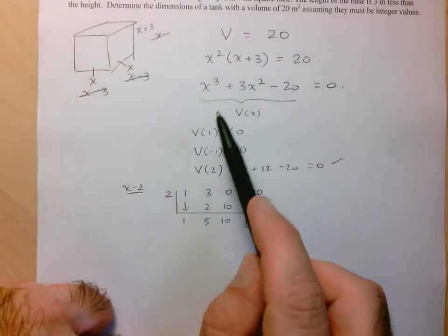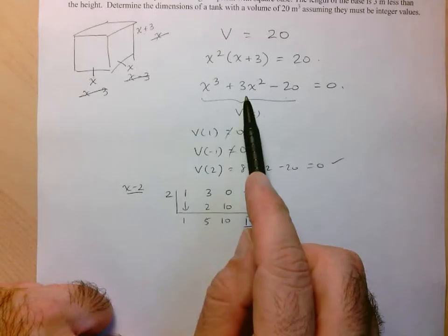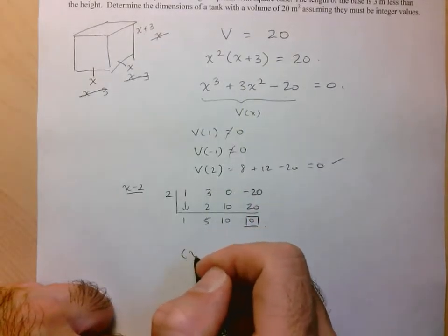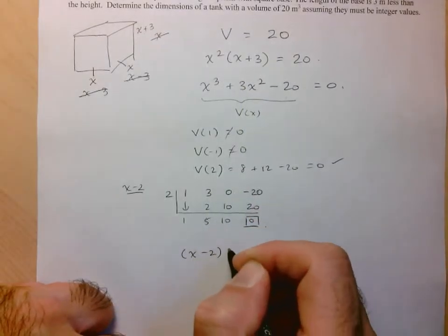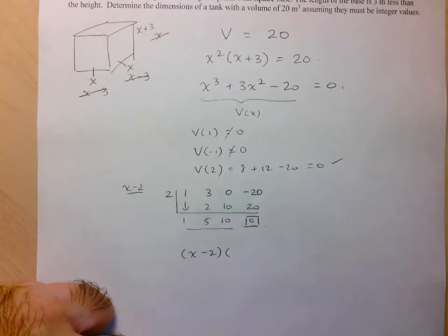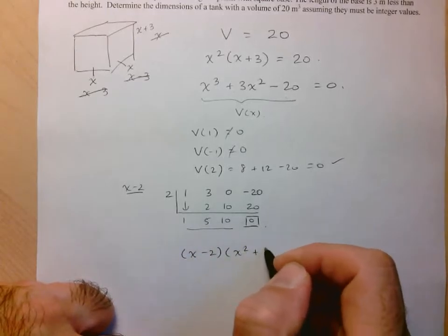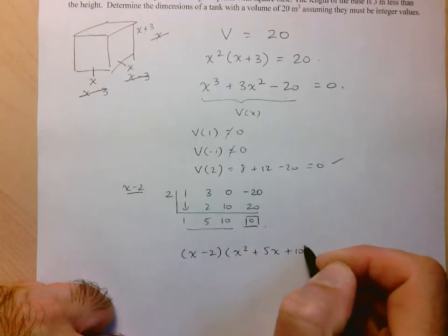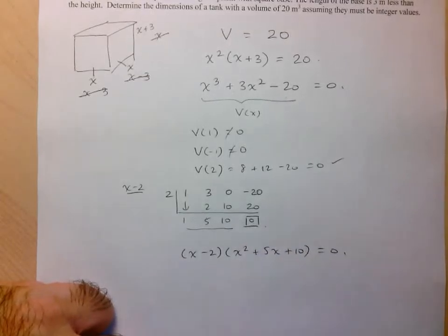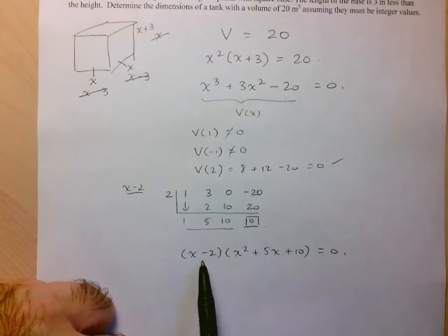So let's go back to our equation here. So now this left-hand expression can be written as x minus 2 times, and we use this here, it's going to be the quadratic that's left over, x squared plus 5x plus 10 equals 0. So we know that one of the solutions to this equation is 2, because it makes this first term 0, hence the whole expression 0.